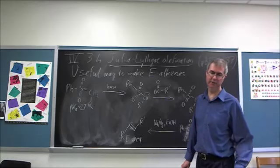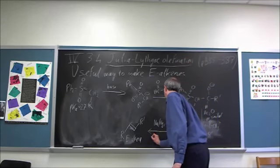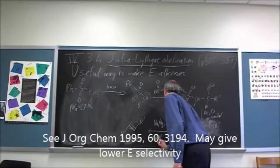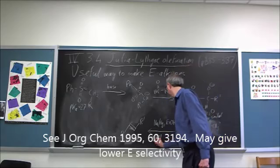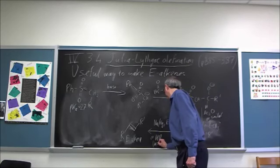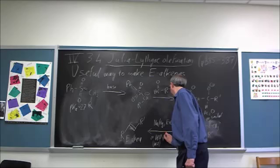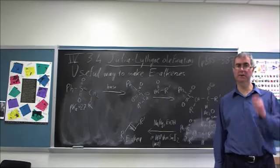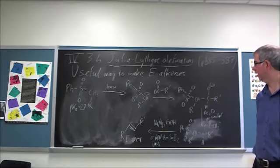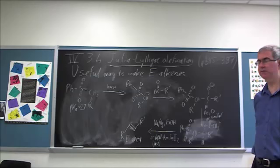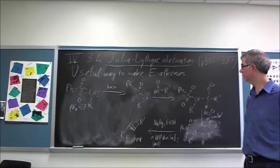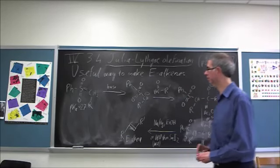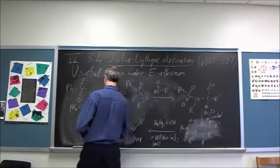There is an alternative workup. You use a base like DBU, then SmI2, samarium iodide - we saw that with Barbier coupling reaction. That's another useful reducing agent. So, you can see it's a bit more hassle to get there. It does produce predominantly the E-alkene.